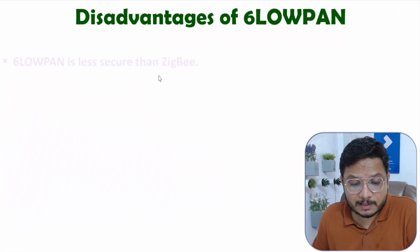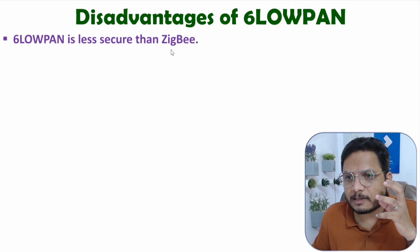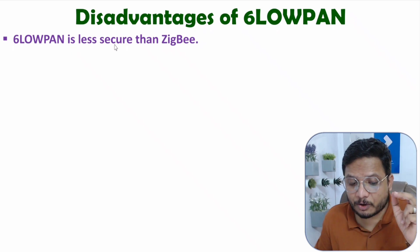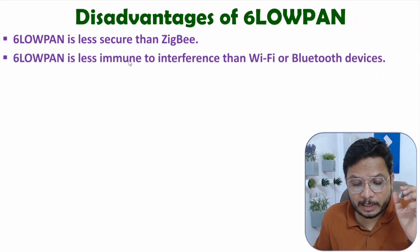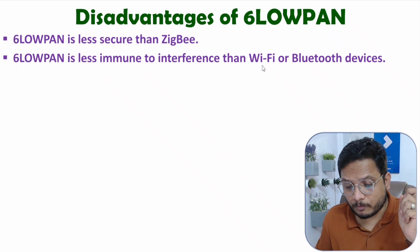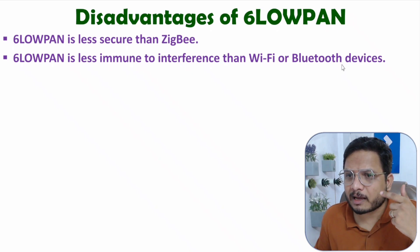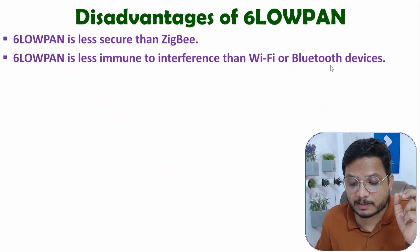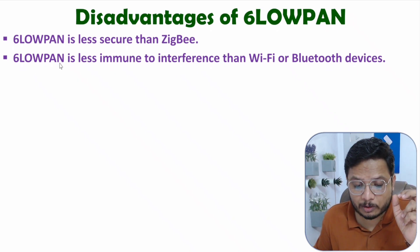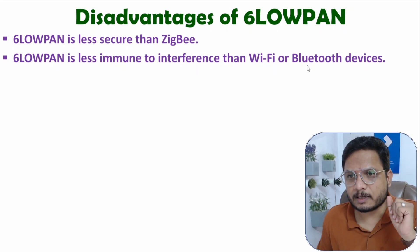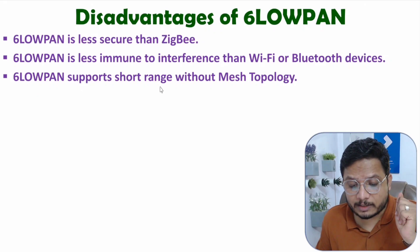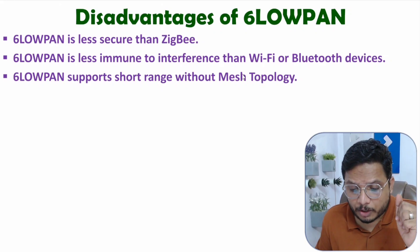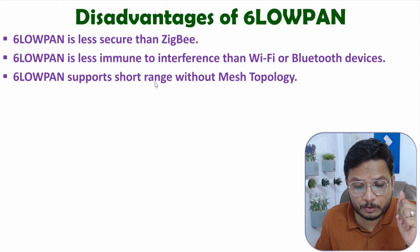Disadvantages of 6LoWPAN: it is less secured than Zigbee overall, even though Zigbee devices are used within the 6LoWPAN network. It is less immune to interference compared to Wi-Fi and Bluetooth devices — for example, Bluetooth uses frequency hopping spread spectrum making it more immune to interference. Also, 6LoWPAN supports only short range without mesh topology; if mesh topology is not used, the range gets further reduced.